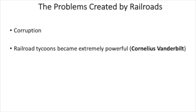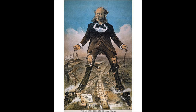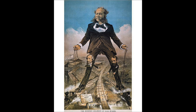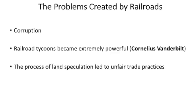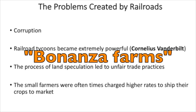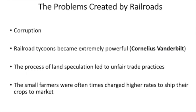Railroad tycoons became extremely powerful and had incredible influence on the government. A great example of a railroad tycoon was Cornelius Vanderbilt. For better or for worse, they ended up being able to wield a lot of political power — sometimes this was good, but oftentimes it was bad. The process of land speculation led to unfair trade practices. The small farmers were often charged higher rates to ship their goods by the railroad companies, while larger, more industrial farm companies would get the lower rate and work with railroad companies to squeeze out the smaller farmers.